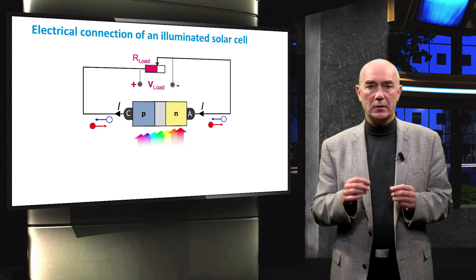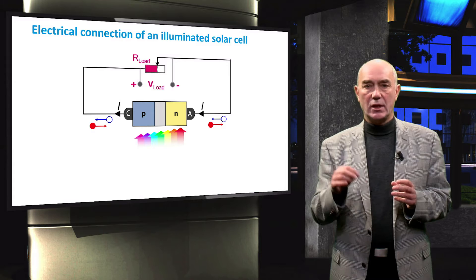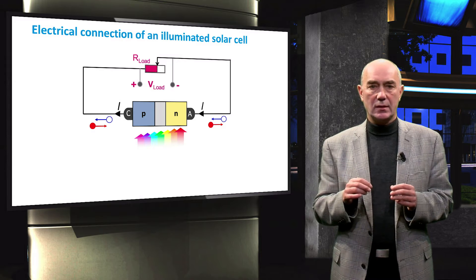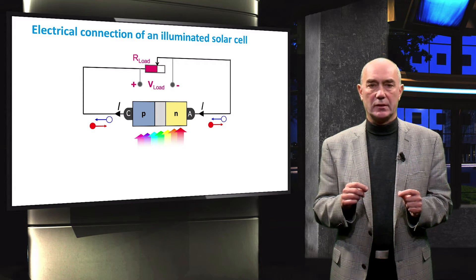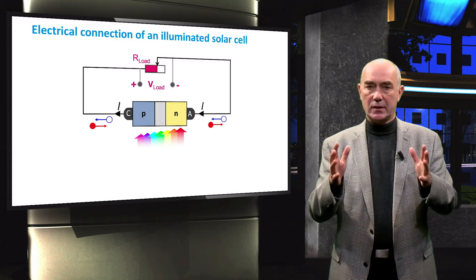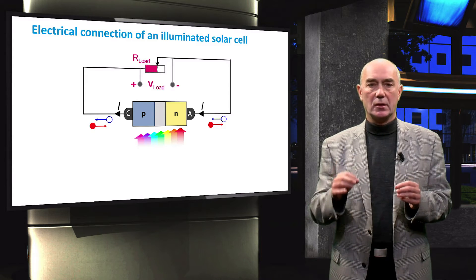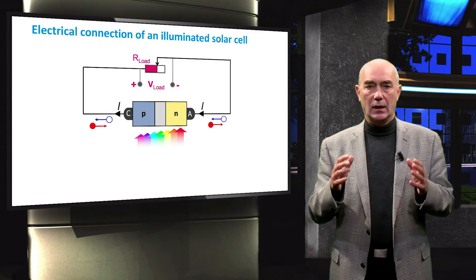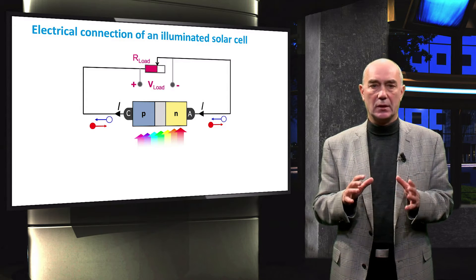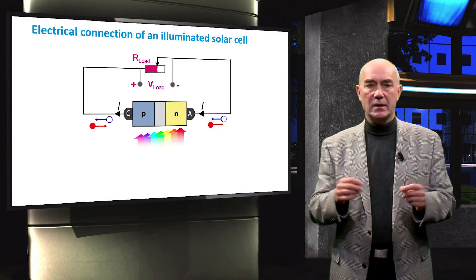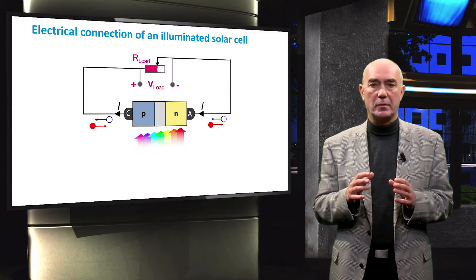This PN junction diode represents a solar cell very well. By changing the resistance of the load, we can manipulate the operational point of a solar cell. We would like to achieve a situation when the product of current and voltage at the load is maximum. In this case the solar cell delivers maximum power to the load — we describe this as the maximum power point.